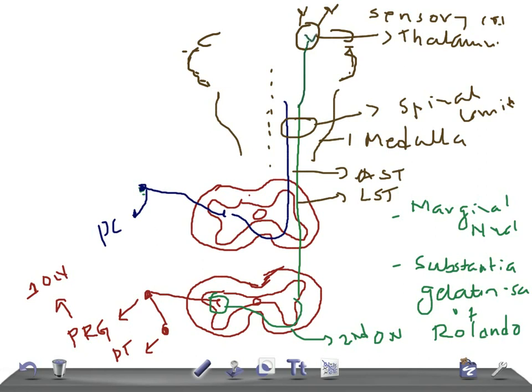The lateral spinothalamic tract goes and ends in the thalamus, just as the anterior spinothalamic tract does. The third order neuron starts from the thalamus to the sensory cortex of the cerebral cortex. So: first order neuron — posterior root ganglion to substantia gelatinosa or marginal nucleus; second order neuron — marginal nucleus or substantia gelatinosa to the thalamus, crossing at the same segment; third order neuron — thalamus to sensory cortex on the same side.